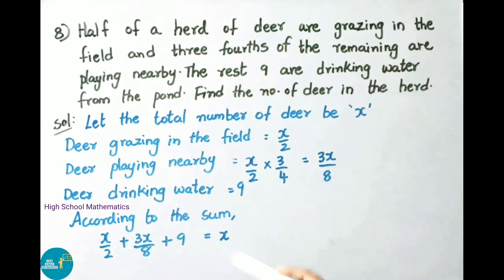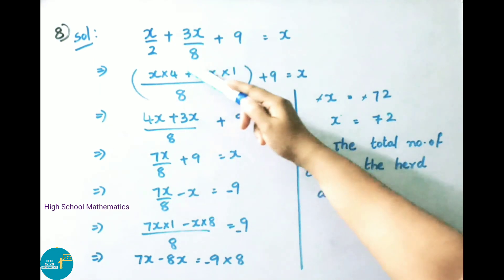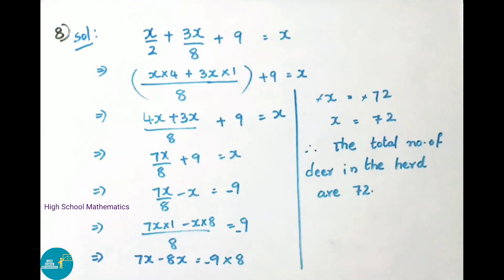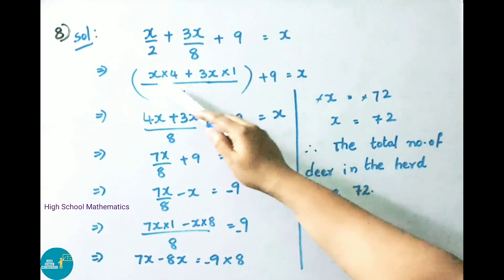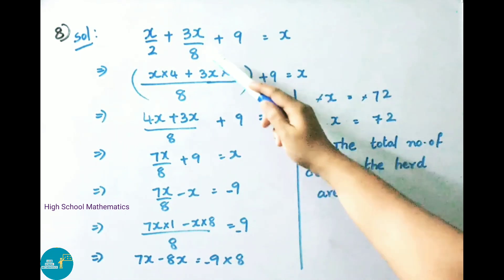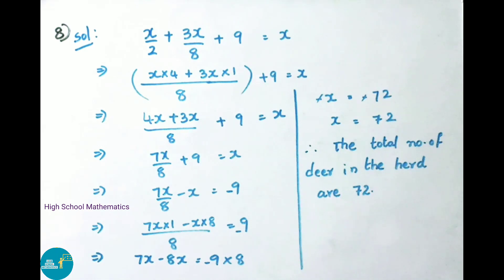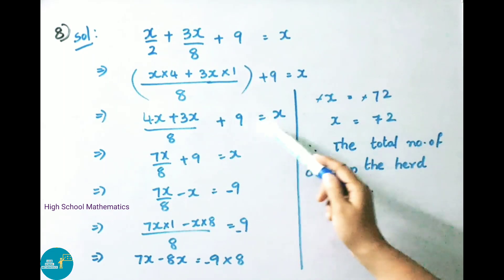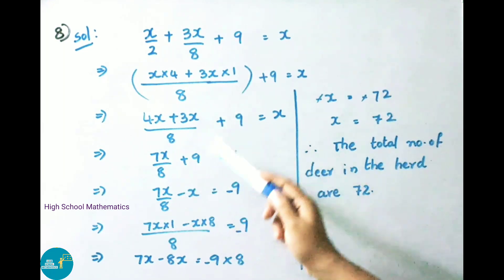Now we solve this to find the total number of deer. Taking LCM of 2 and 8, which is 8: x by 2 becomes 4x by 8, and 3x by 8 stays as 3x by 8. So 4x plus 3x by 8 plus 9 equals x, which gives 7x by 8 plus 9 equals x.